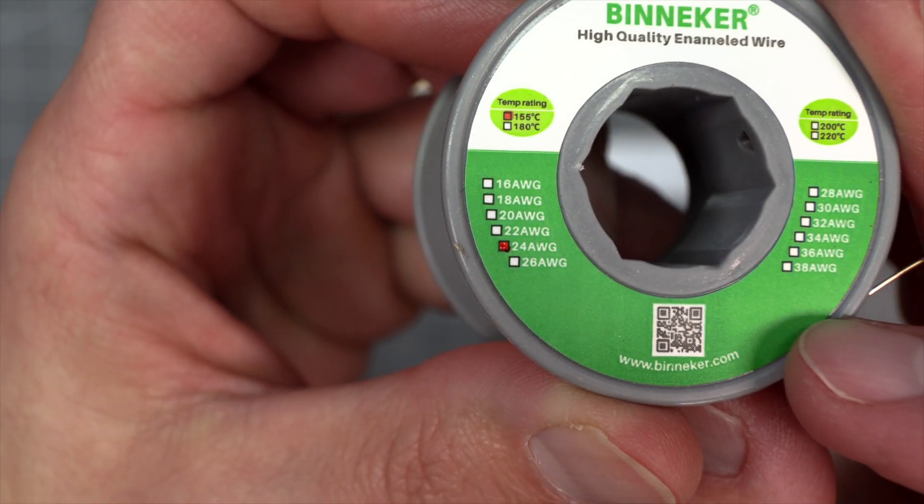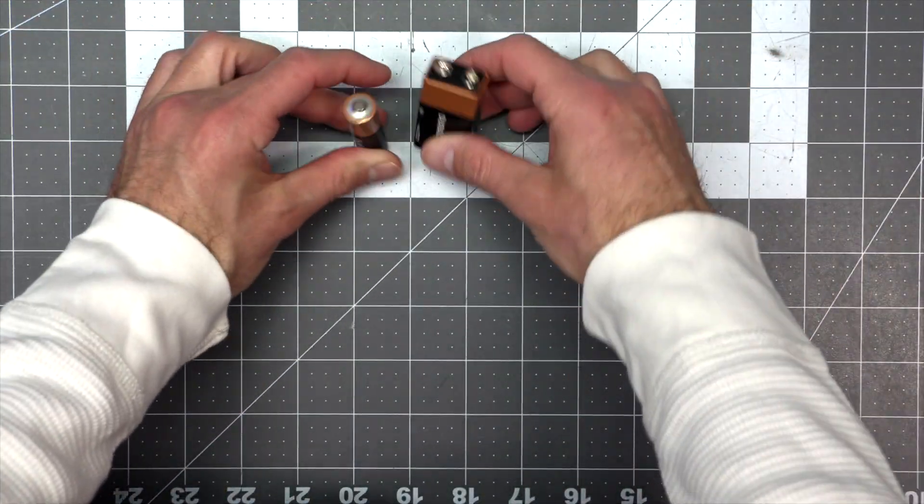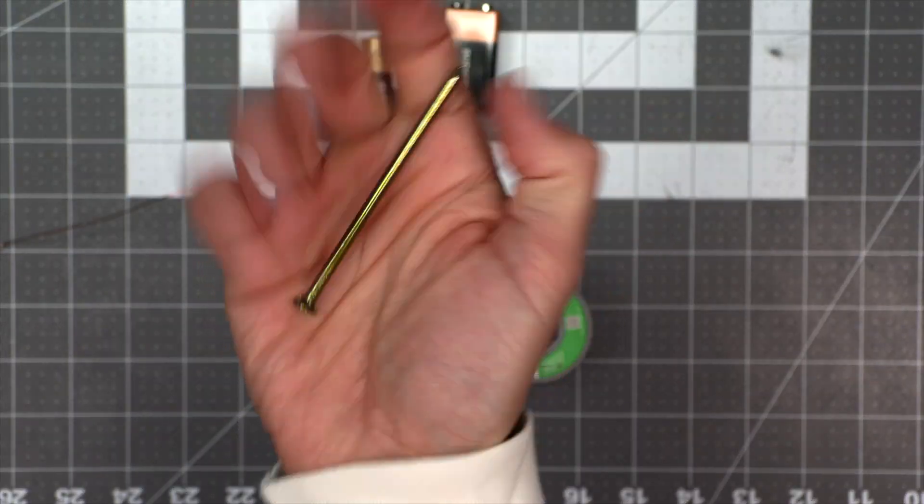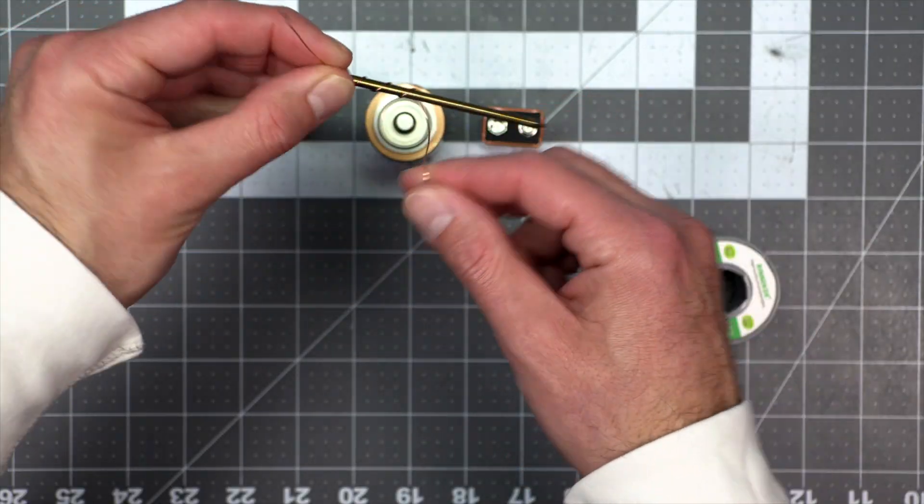You're going to need some copper wire. You're going to need at least one battery, but you may want more to experiment with different voltages. And lastly, you'll need a nail or a screw made of iron. Take your copper wire and wind it around your iron nail.